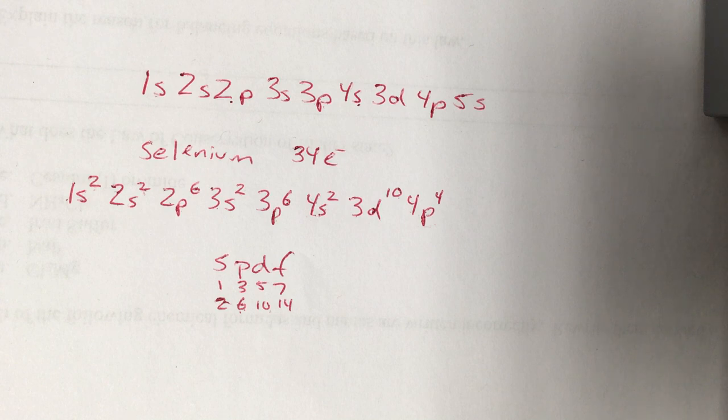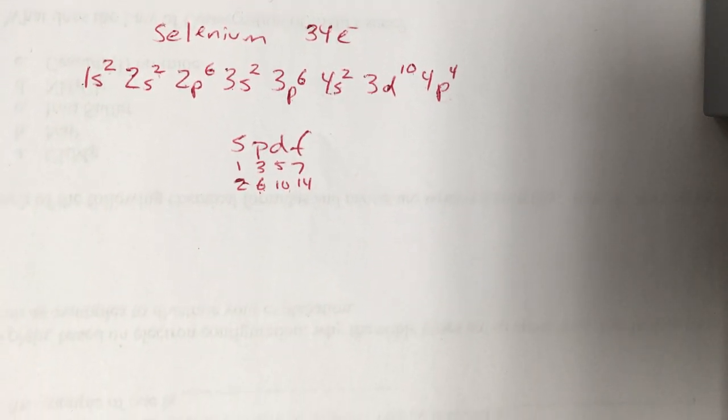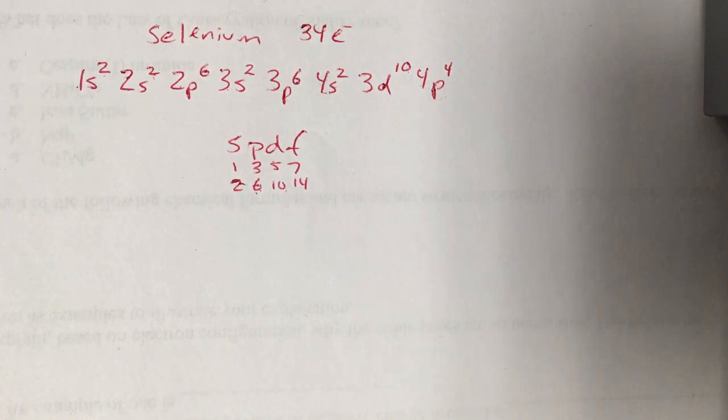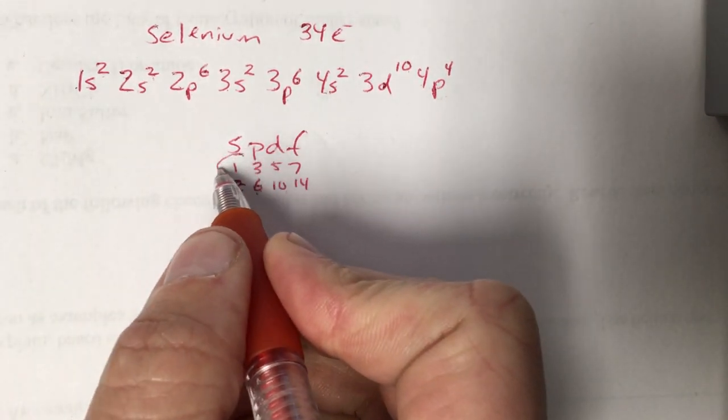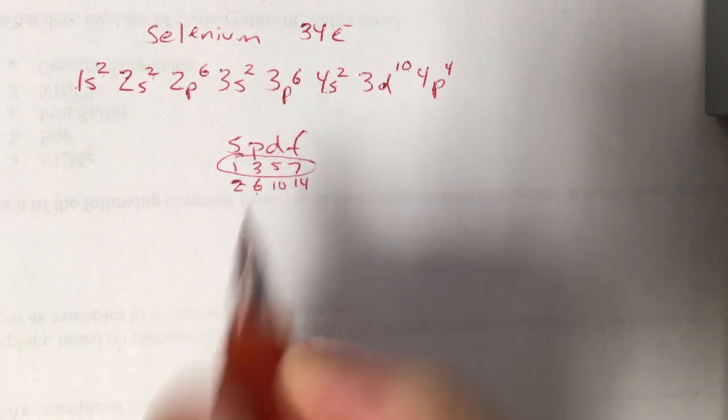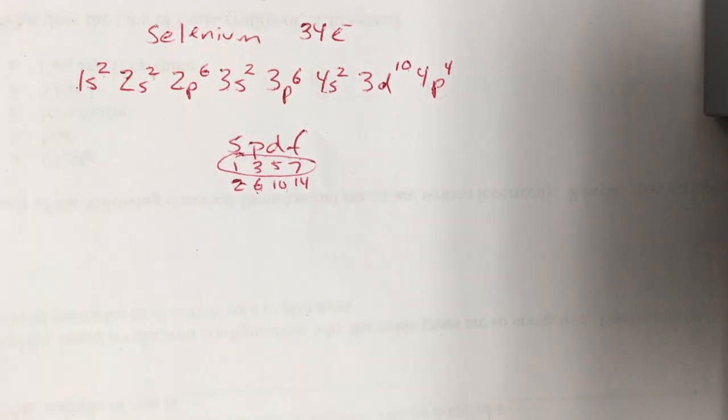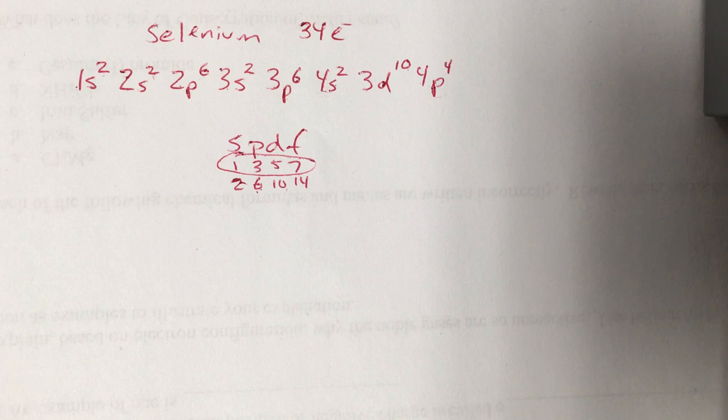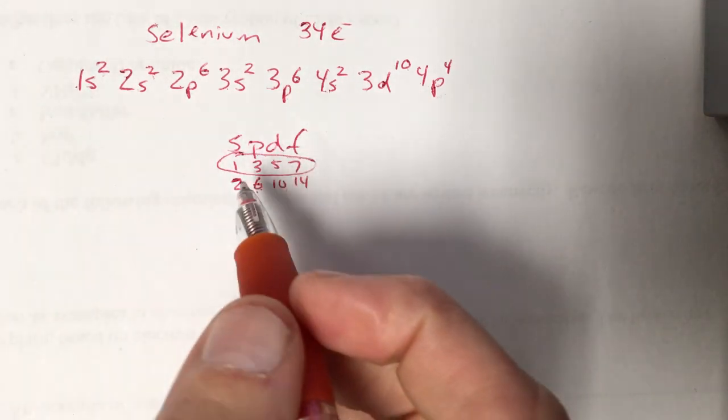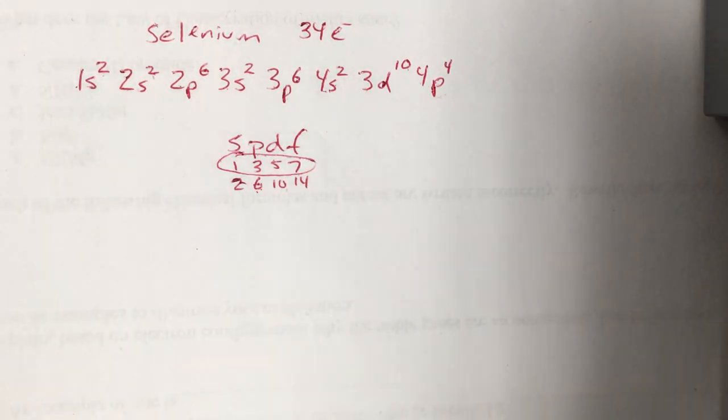Now on to orbital notation. In orbital notation we just want to draw this. We want to show what it looks like. Put little arrows in to represent the electrons. Show all the sub-orbitals. Stuff like that. That's based on this right here. What you're going to do is you're going to draw a little blank. That blank represents your sublevel. And then you're going to put arrows on that blank that represent the electrons. One arrow going up, the other one going down to show that opposite spin that the Pauli exclusion principle says we have to have.